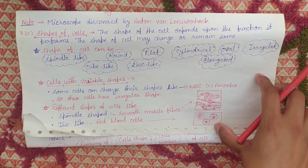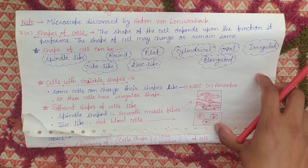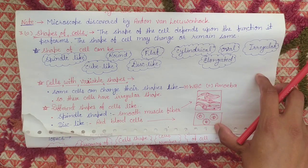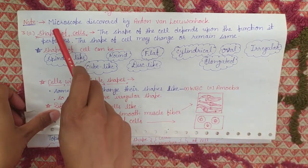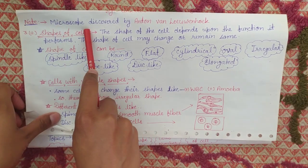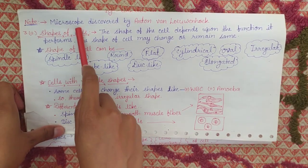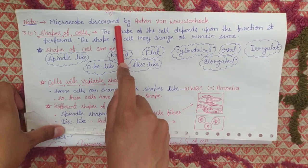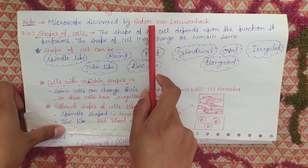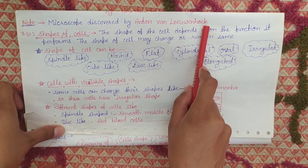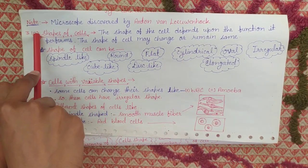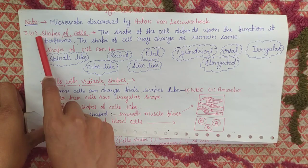Good morning students. So now we will start. Those I taught you yesterday — I will start now. That day I told you about the discovery of the microscope. So who discovered the microscope firstly? Anton van Leeuwenhoek. Now the next topic is here.